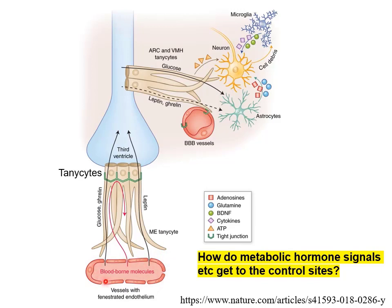But in the median eminence, the vessels are fenestrated — they have holes in them. That allows releasing hormones controlling the anterior pituitary to enter them, but it also means blood-borne molecules such as metabolic hormones can get out. Lining the third ventricle are a layer of epithelial cells called tanycytes, which have long processes extending through the median eminence toward these fenestrated vessels.